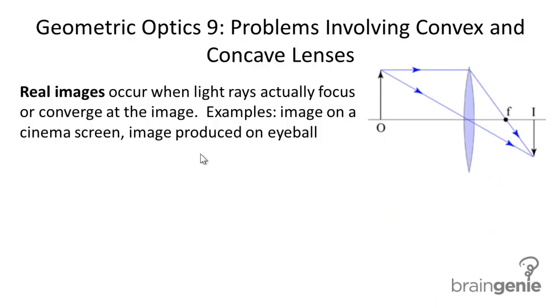In this image we have a converging or convex lens and we can see that the light rays actually converge on the image. These are real refracted rays and they actually converge on the real image. So that's what a real image is.